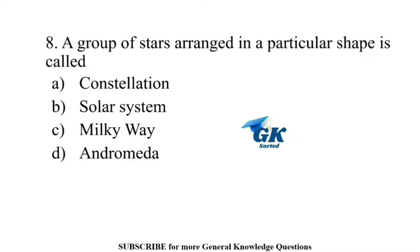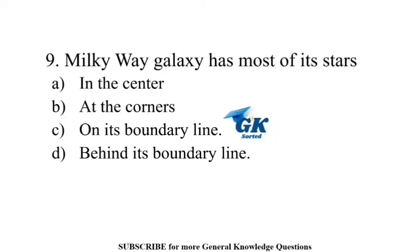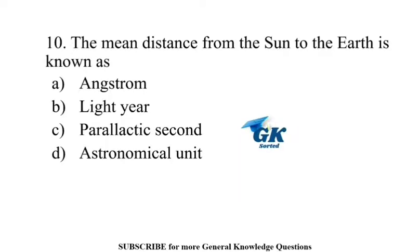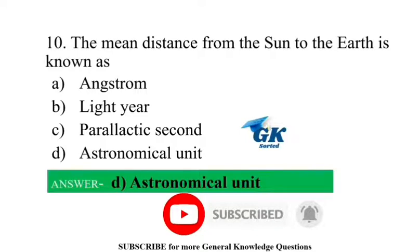A group of stars arranged in a particular shape is called a Constellation. The Milky Way has most of its stars in the center. The main distance from the Sun to the Earth is known as an Astronomical Unit.